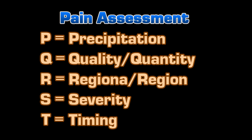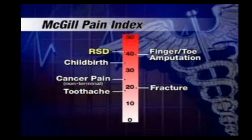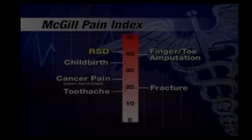Another type of assessment scale that is available is the McGill Pain Questionnaire. This consists of 20 items broken down into four categories: first is sensory; second is affective, which has to do with the emotional or feeling perception of pain; next is evaluative; and the last three questions on this 20-item questionnaire deal with miscellaneous items.